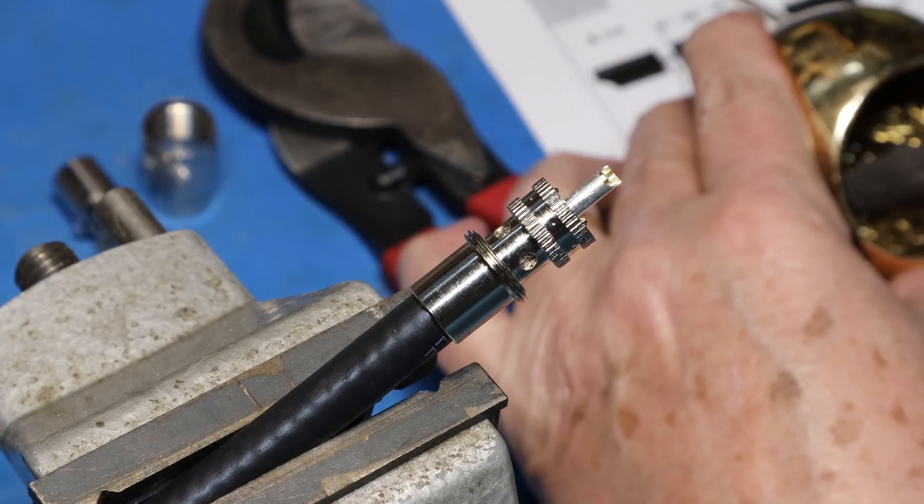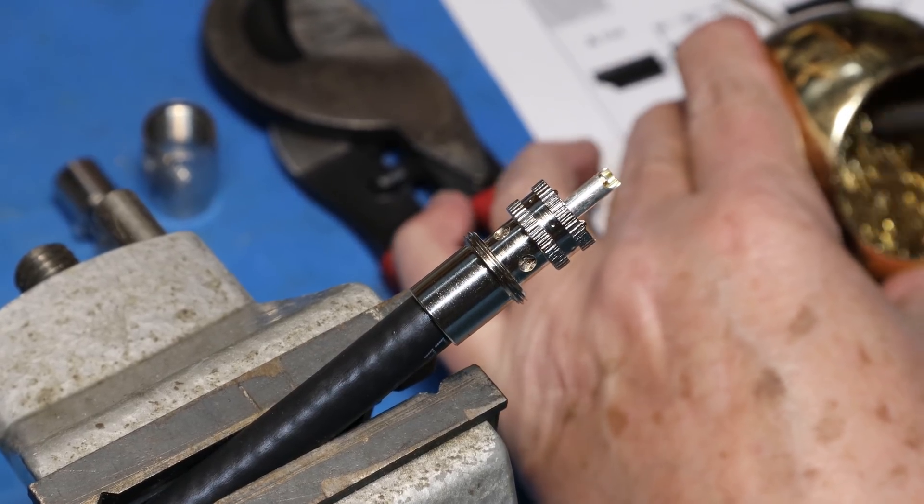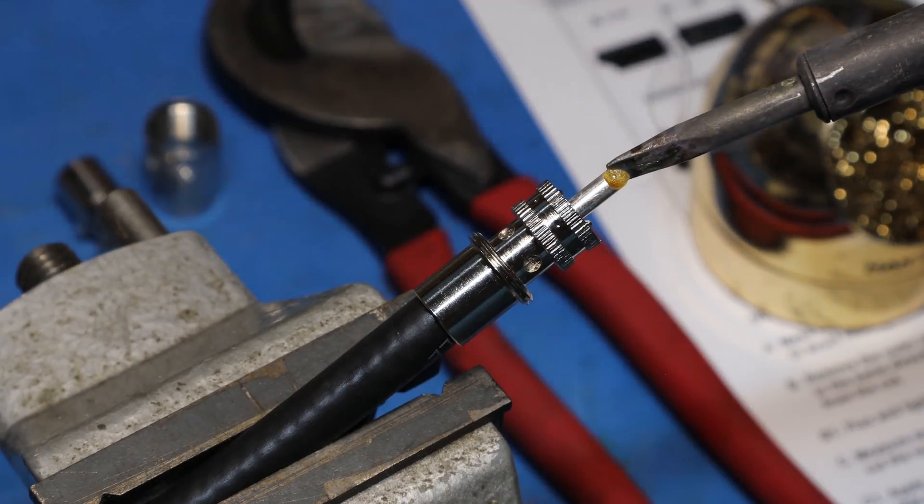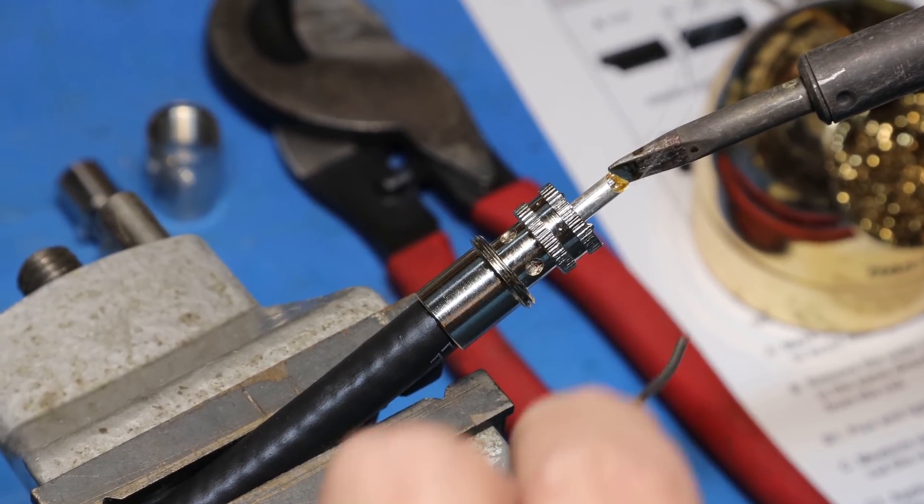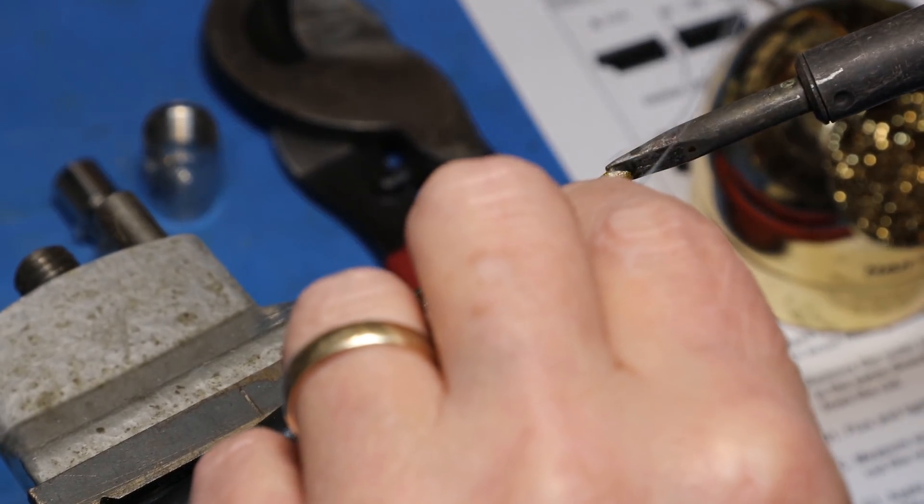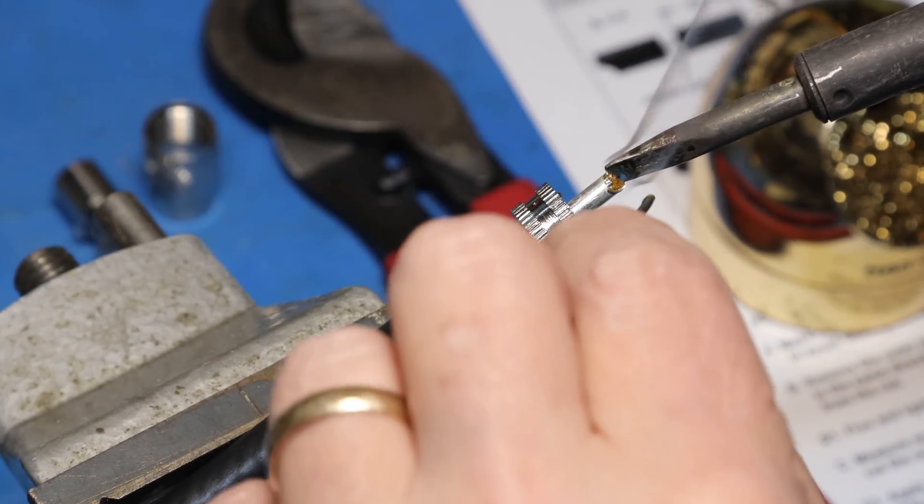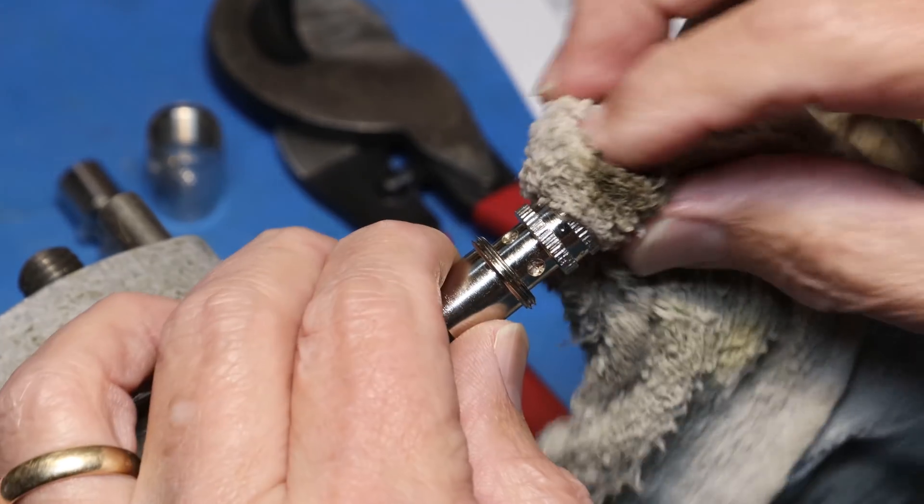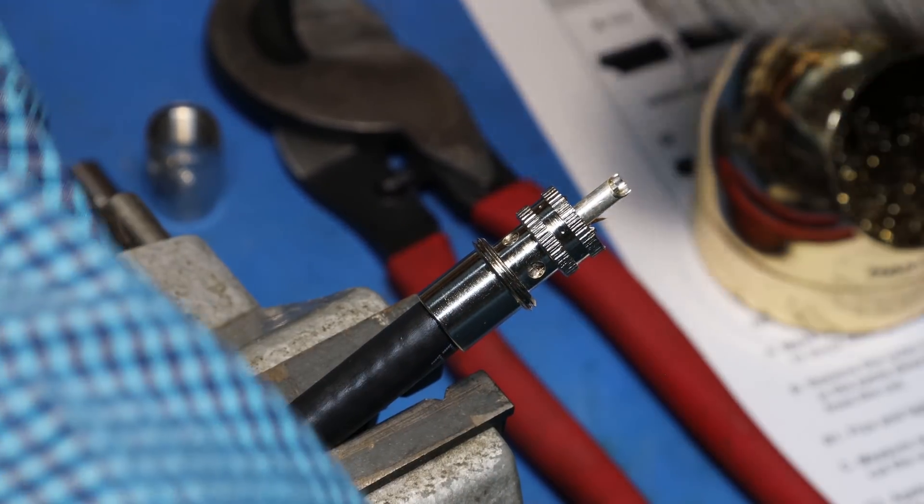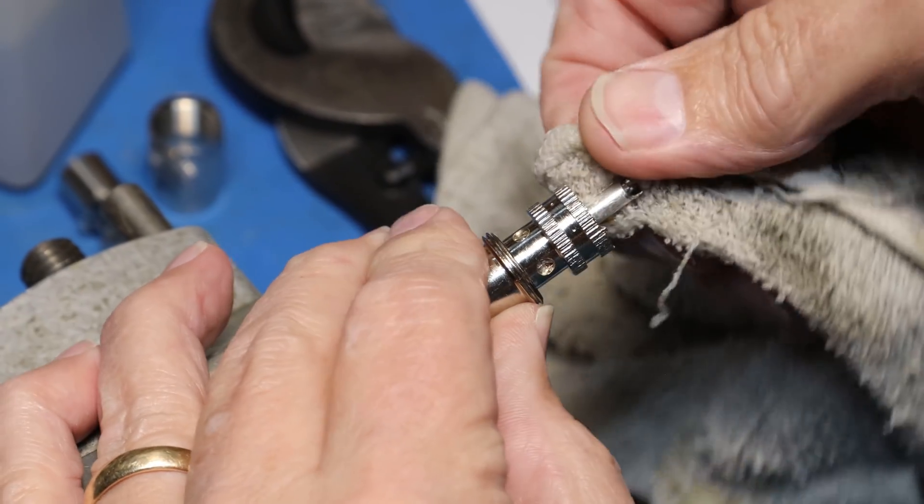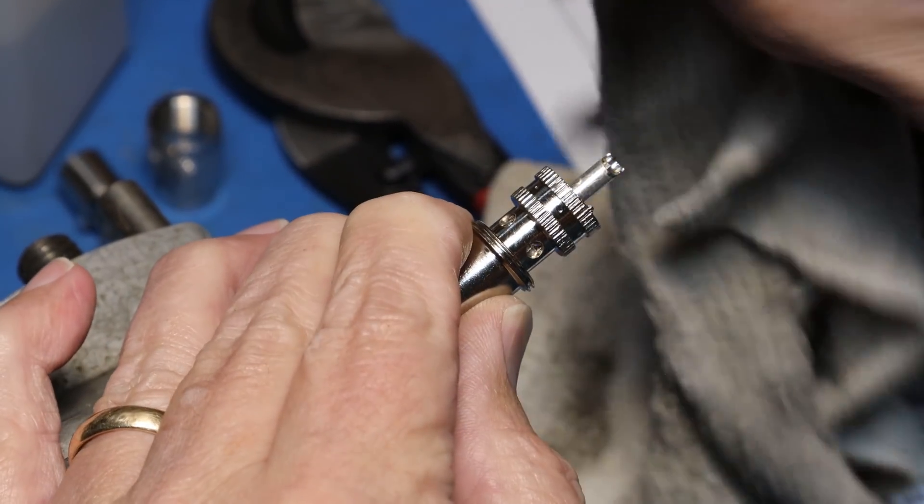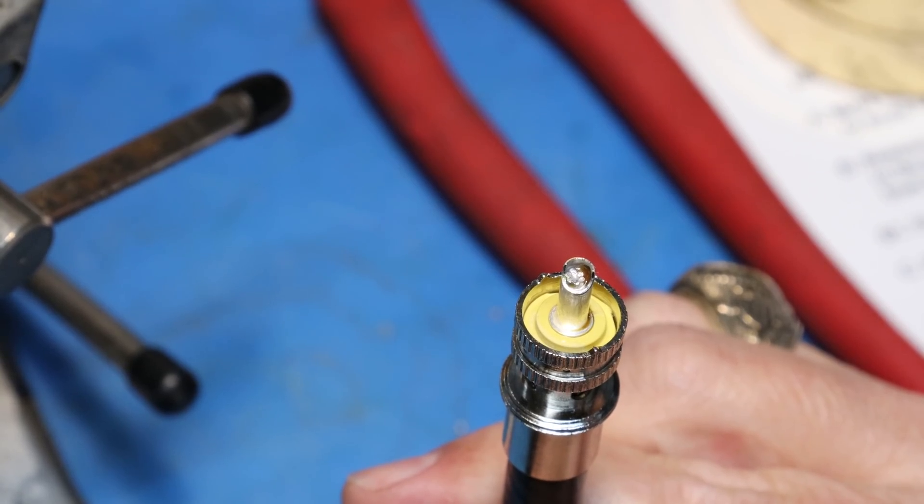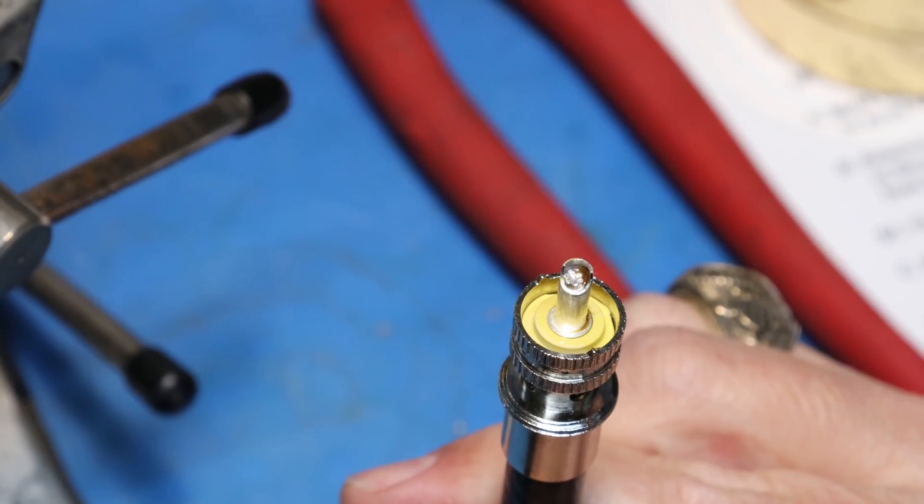Now it is time to solder. It may be handy to clamp the coax in a vice. We will start by soldering the center conductor to the connector. Next, use a rag and some isopropyl alcohol to clean the flux from the center pin. You can see we have a nice solder joint between the center conductor and the connector.